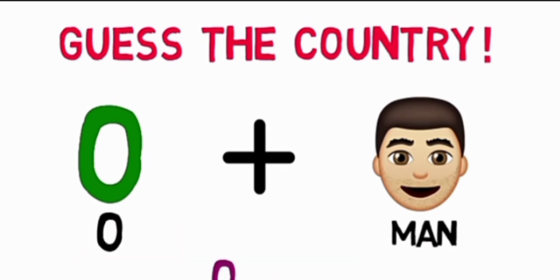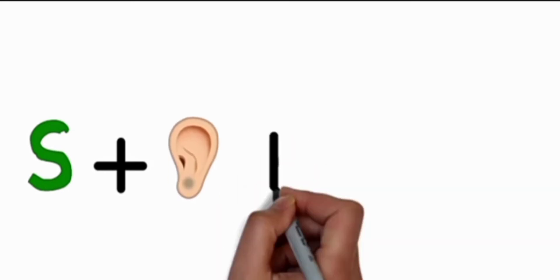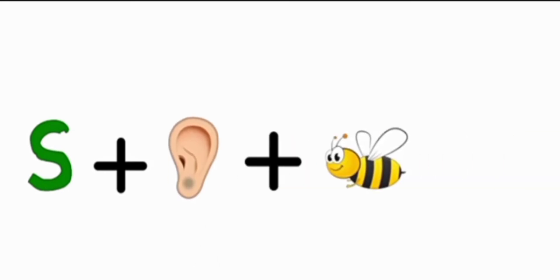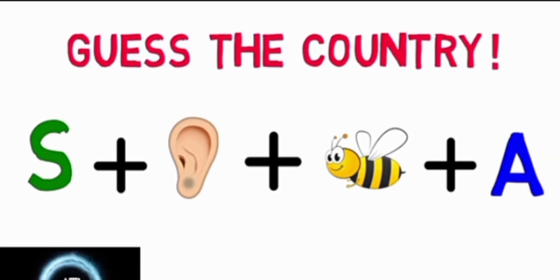Number seven: S plus year plus B plus A. This one is a little bit difficult but you have to guess. It's also 10 seconds. So this country is Serbia. This is also new.